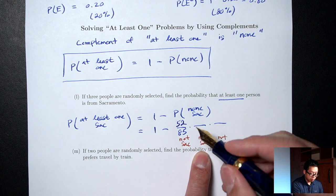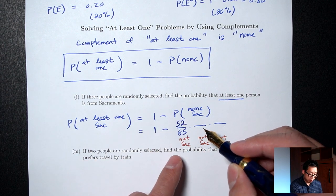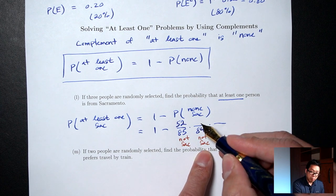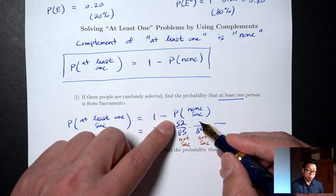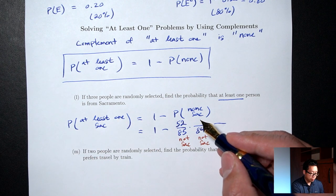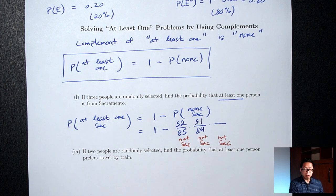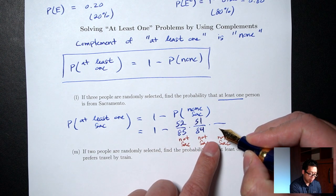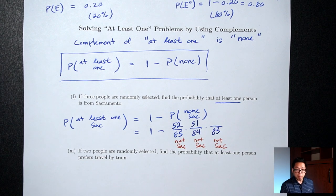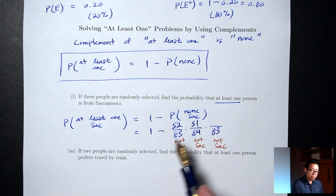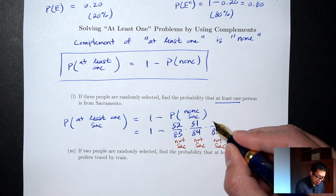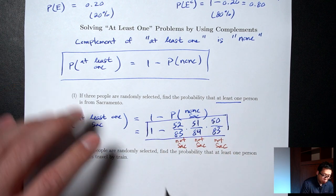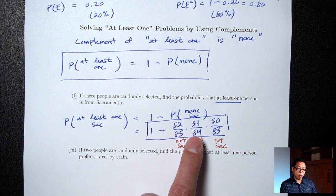So the final answer is 1 minus (52/85 times 51/84 times 50/83). Don't forget the 1 minus.